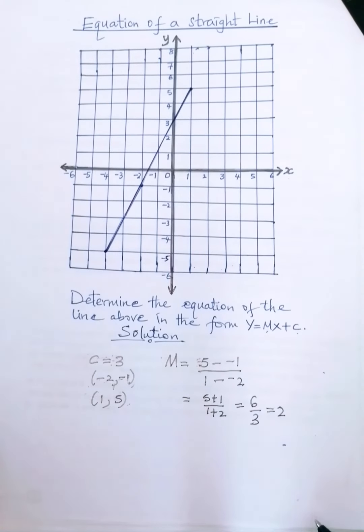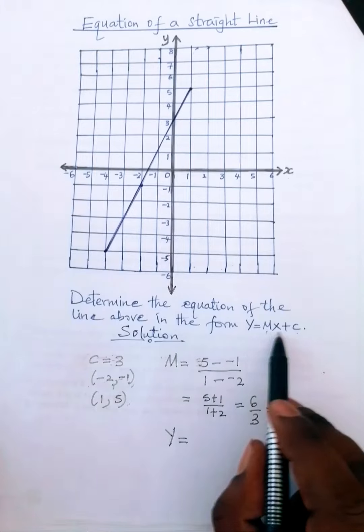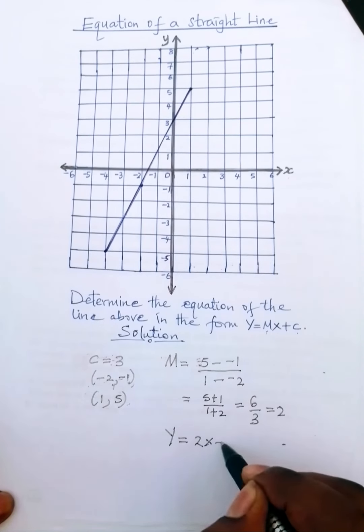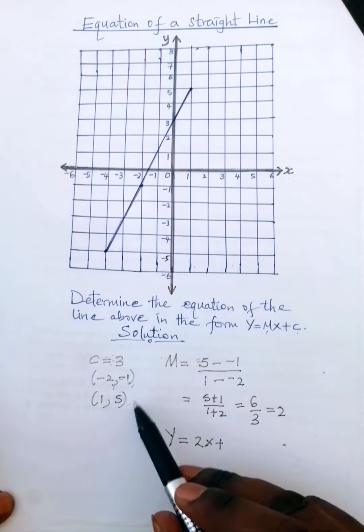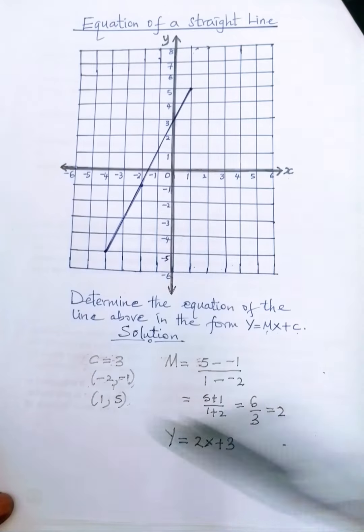And therefore 2 is our gradient. So therefore, the equation is y is equal to mx plus c. Now m is 2, plus c, the y-intercept, is 3. And that is the equation of the line.